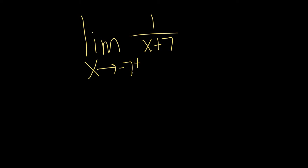In this problem, we have to find the limit as x approaches negative 7 from the right of 1 over x plus 7. So if you just plug in the negative 7, that will not work.